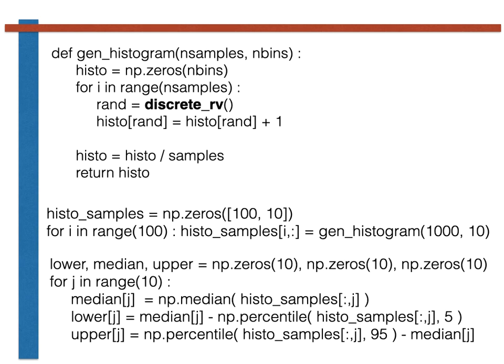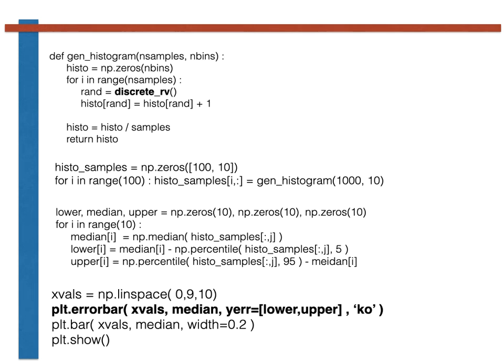We calculate the lower and upper arrays in this way because then we can use the command shown here to draw error bars around the median. The command in question is the one in bold, plt.errorbar.